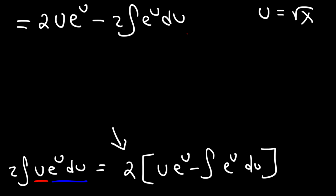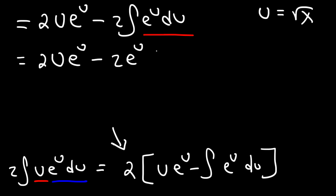And we know what the integral of e to the u is — it's going to be e to the u plus c. So this is going to be 2u e to the u, minus 2 times e to the u, plus c. You don't have to say 2c because that's still going to be a constant, so we'll just write plus c. Now the last thing we need to do is replace the u variable with the square root of x. Here's the final answer — let me write the original problem.